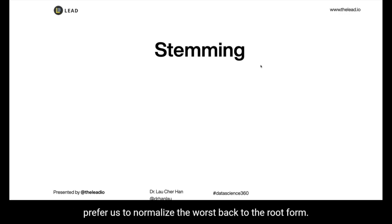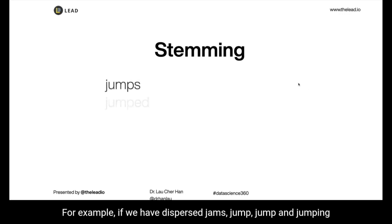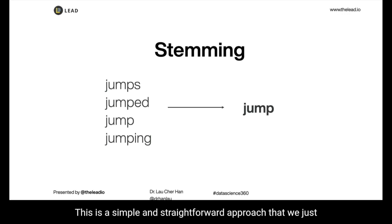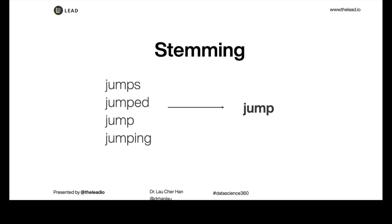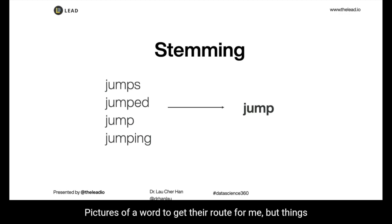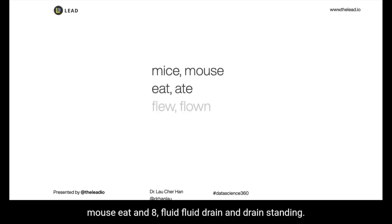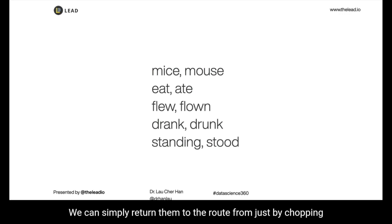Then we perform stemming. Stemming helps us normalize words back to their root form so they won't be considered as different words. For example, if we have the words 'jumps,' 'jumped,' 'jump,' and 'jumping' in our document, they will all be reduced to the root form 'jump.' This is a simple and straightforward approach — we just chop away the last few characters of a word to get its root form. But things are not always that easy. Sometimes we have tricky scenarios — for example, 'mice' and 'mouse,' 'eat' and 'ate,' 'flew' and 'flown,' 'drank' and 'drunk,' 'standing' and 'stood.'